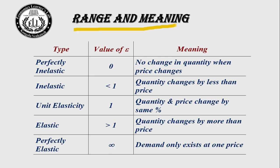Range and meaning — this table is very useful, so you can make a note. The values of the different types of elasticity are: perfectly inelastic = 0, inelastic = less than 1, unitary elastic = equal to 1, relatively elastic = greater than 1, and perfectly elastic = infinity. Be very familiar with these values.